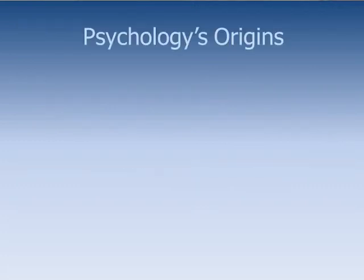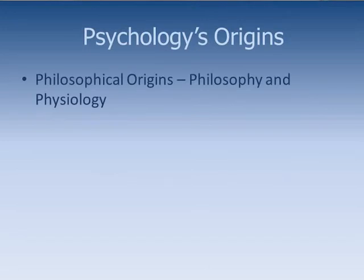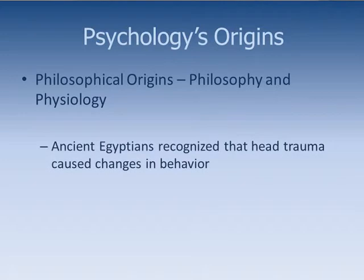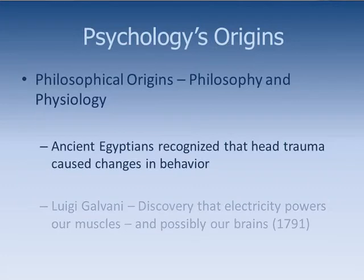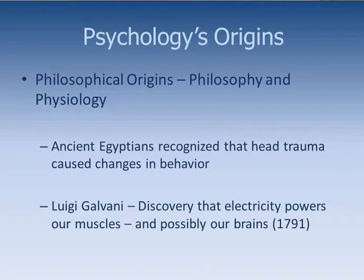Psychology's origins are unclear. It is thought that the philosophical origins of psychology started with philosophy and physiology. The ancient Egyptians recognized that head trauma caused changes in behavior. One example of a discovery is Luigi Galvani. In 1791, he discovered that electric charges applied to nerves or muscles could cause the limbs of frogs to twitch, even after the frogs were dissected. Galvani proposed that animal electricity was the basis of movement and even life itself.